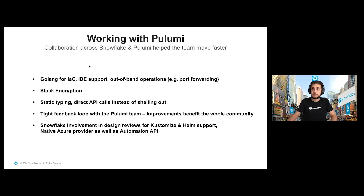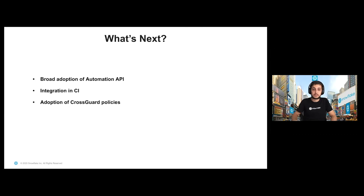Working with Pulumi helped us get to our goal fast. We were able to use a standardized language and framework with full IDE support including debugging. We have out-of-band operations such as making API calls as we just saw. We can use custom stack encryption to store secrets in the state. We have static typing. And ultimately the tight feedback loop we had with the team at Pulumi really helped us get to our goal. Our team was also involved in design reviews for new features to Pulumi that will benefit the whole community. What's next? We hope to broadly adopt the automation API once it gets out of alpha, set up CI systems to drive automation even further, and put cross-cutting policies in place. Right now we're up and running in over 20 regions in a very short time span, covering all major cloud providers, and we're super happy with the result.